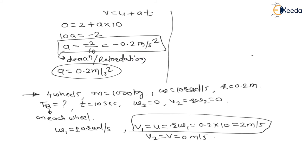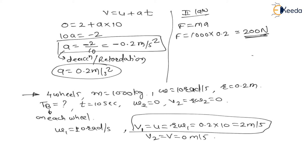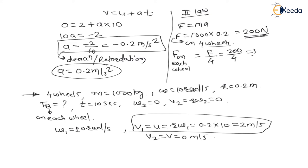As per Newton's second law, force = mass × acceleration. The braking force required = 1000 × 0.2 = 200 Newton. This force acts on all four wheels. Therefore, force on each wheel = 200 ÷ 4 = 50 Newton.